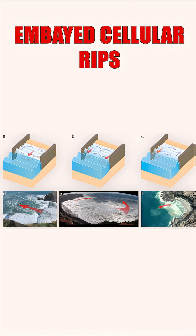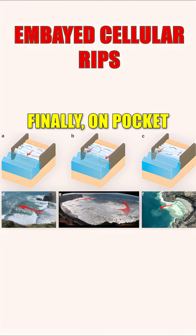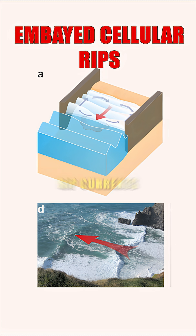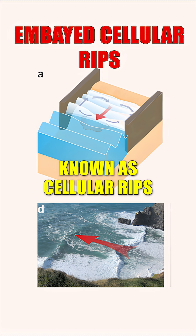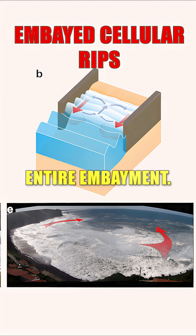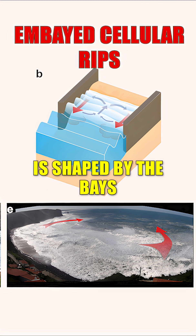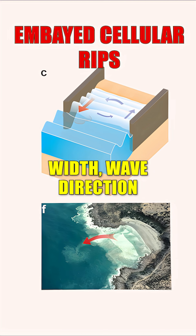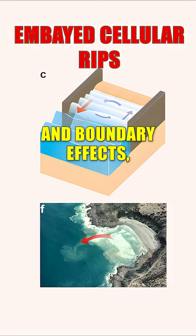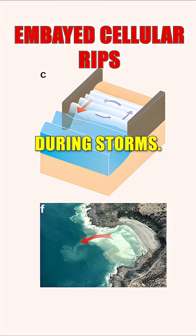Embayed cellular rips: on pocket beaches enclosed by headlands, large looping rip currents known as cellular rips dominate the entire embayment. Their formation is shaped by the bay's width, wave direction, and boundary effects. And they can grow especially strong during storms.